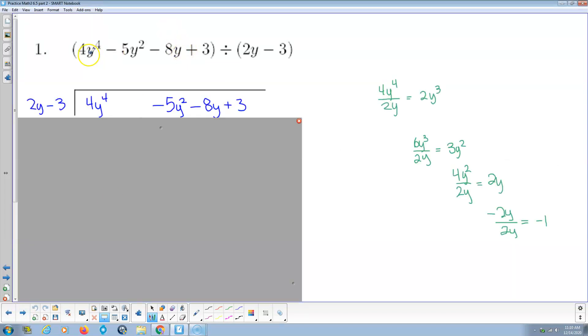Okay, so here we go. We have 4y to the 4th plus 5y squared minus 8y plus 3 divided by 2y minus 3. Notice the thing to note here is there's no y to the 3rd term. So that's a missing term. Notice I left a blank spot for y to the 3rd. Now here we go.